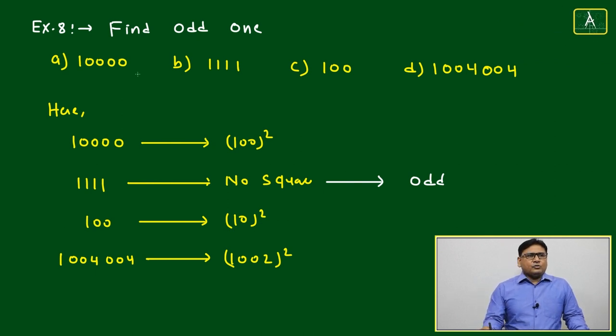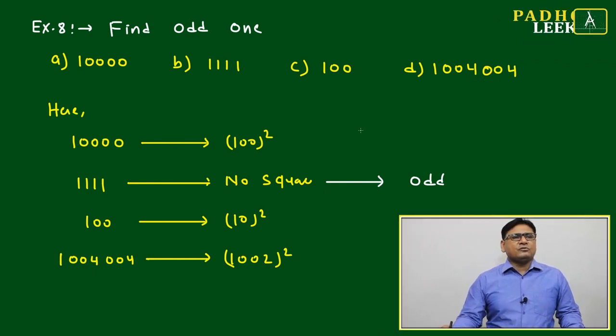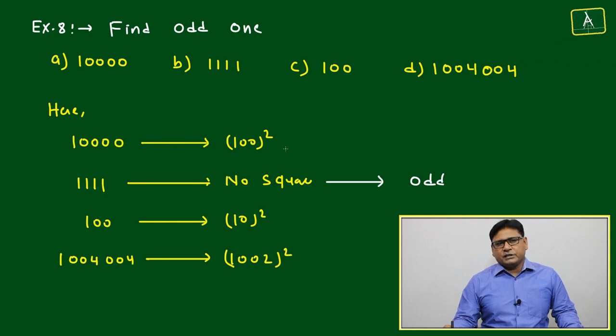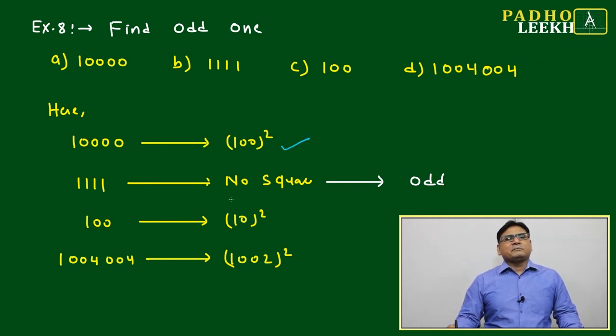Find odd one. Here it is given: ten thousand, one one one one one one, one hundred, one zero four zero zero four. By seeing itself we can say certain number properties will be there. Here it is a perfect square.